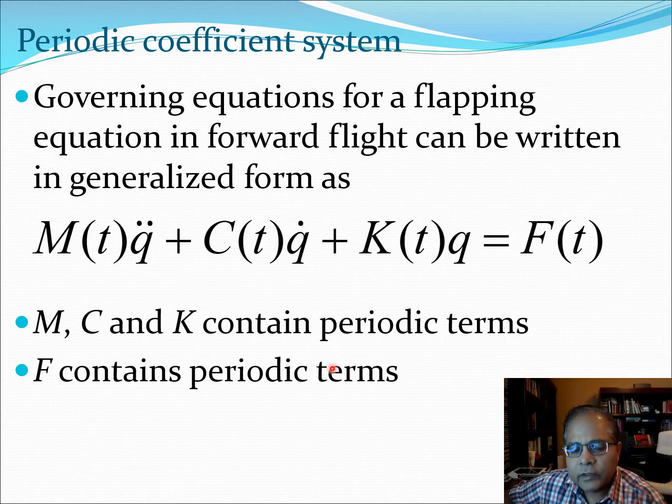Generally you are used to differential equations where F is a function of time and this may also be periodic, for example it could be sine psi or some function of sine or cosine. But when M, C and K are functions of time this problem becomes much more complicated. So M, C, K containing periodic terms essentially constitutes a periodic coefficient system. The coefficients of Q double dot, Q dot and Q are now periodic functions.